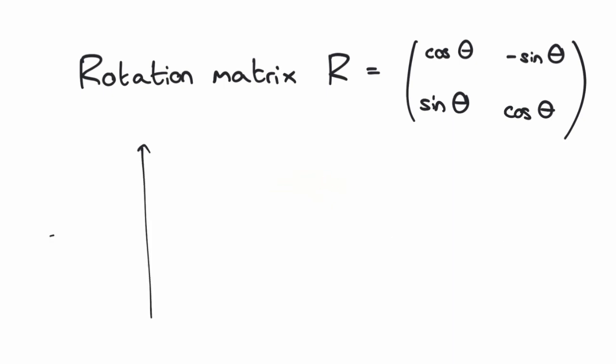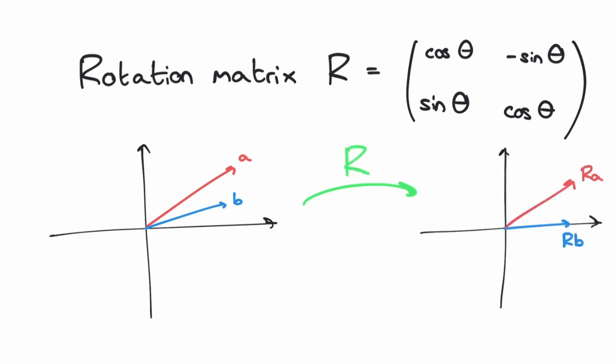We want to choose theta so that the result of rotating B is that it lies on the horizontal axis. The rotated vectors are called Ra and Rb, since pre-multiplying A and B with matrix R corresponds to rotating A and B by angle theta. Let's focus on Rb, which is the vector B after it's been rotated by the angle theta. Let's call its horizontal component x and its vertical component y. But we want Rb to be horizontal, so the vertical component y should be 0.